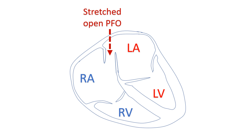Another situation is a stretched open PFO. When the pressure in the right atrium or left atrium rises significantly due to another disease, the atrium enlarges and stretches the inter-atrial septum along with it. When the PFO is stretched open, blood can flow either way depending on which side has the higher pressure. If it is the left atrium which is enlarged, the stretched open PFO will shunt blood in a left-to-right direction, and vice versa.